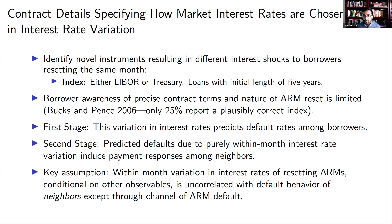In the first stage, we look at how variation in interest rate shocks affects default rates. In the second stage, we look at the neighbors of those shocked individuals to see how defaults causally impact the choices of people that live nearby. The key assumption is not that LIBOR and Treasury borrowers are randomly assigned — we can control for whether you have a LIBOR or Treasury loan — but that the interest rate spread variation coming from their choice of index, which varies over time, is uncorrelated with neighbor responses other than through the channel of ARM default.